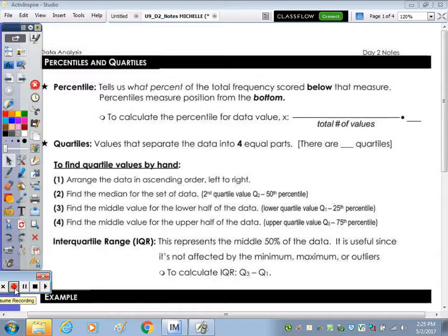So at the top of the page, it says a percentile tells us what percent of the total frequency scored below that measure. So percentiles measure positions from the bottom. To calculate a percent, any time it says calculate, it means you have to show the operation.